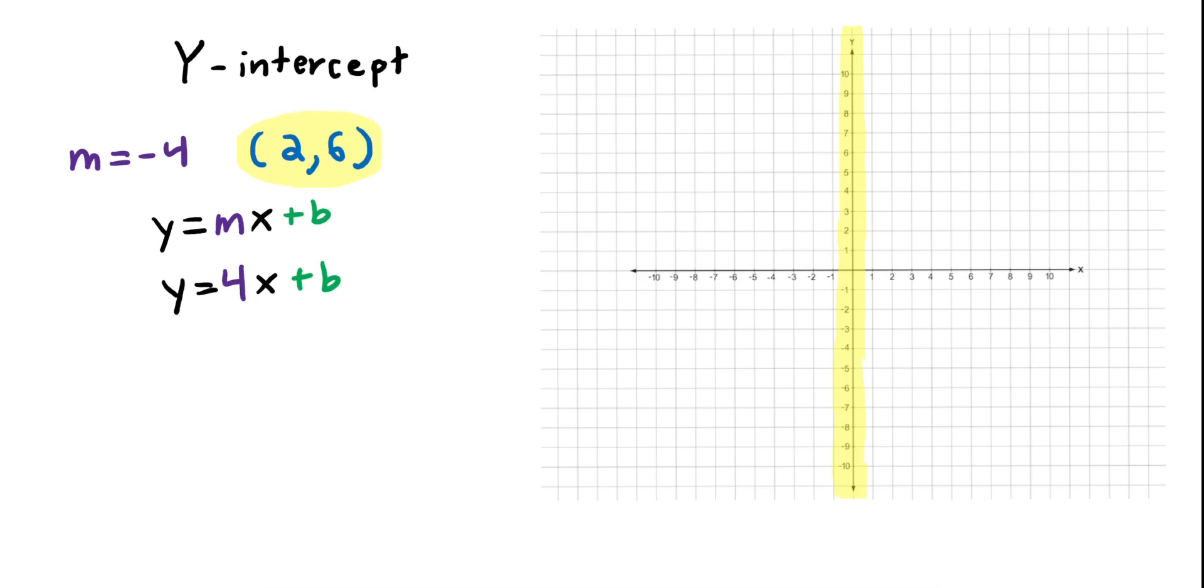Take that point you were given and plug it in. So, in this point, x comma y, the 2 is the x value. So go ahead and replace the x in this equation with 2. And then the 6 is the y value. Replace the y in this equation with 6. So you can just go ahead and rewrite the equation now that you've plugged it in. And now you are left with 6 equals 4 times 2 plus b. Now you can just do some math and you're left with 6 equals 4 times 2 is 8 plus b. We treat this like a regular equation.